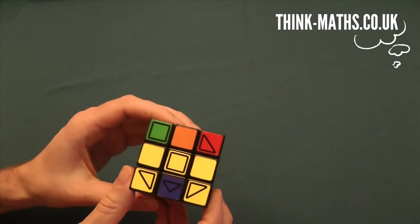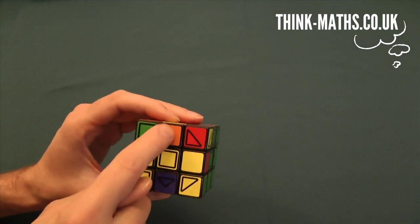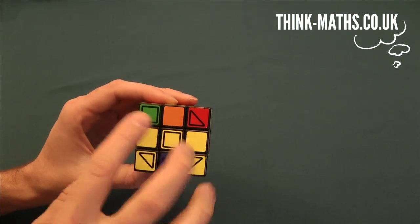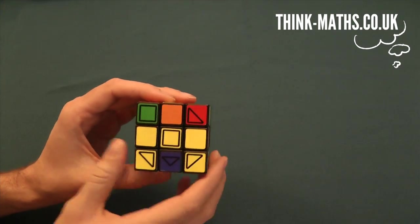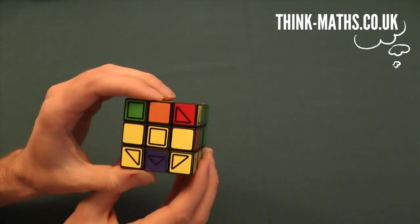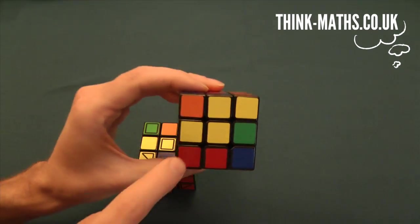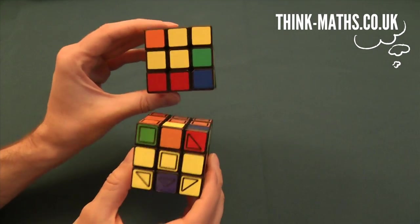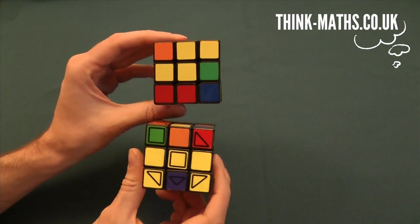The first step for this face, just like way back when we started with the white, is to get a cross in the middle. As you can see we haven't got a cross here, we've got a line. You can completely ignore the corners for now. So we want to turn this line into a cross. In fact there are two different options you could be faced with: you can either have a line there or you might have like a V in the corner. You might be lucky and already have the whole cross done, in which case you can just skip to the next step.